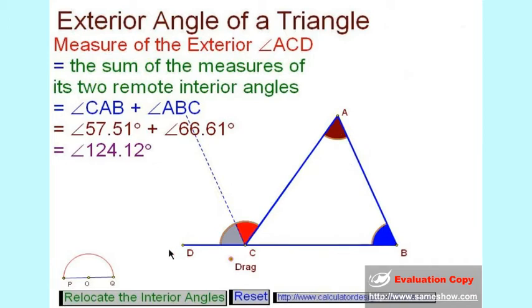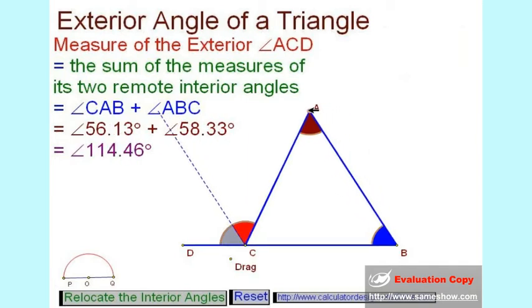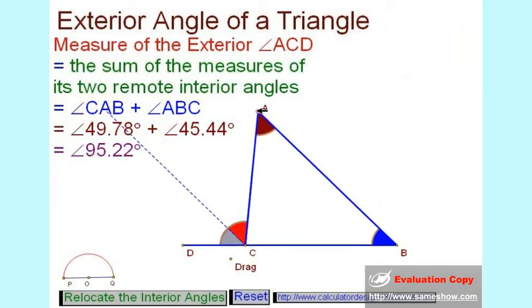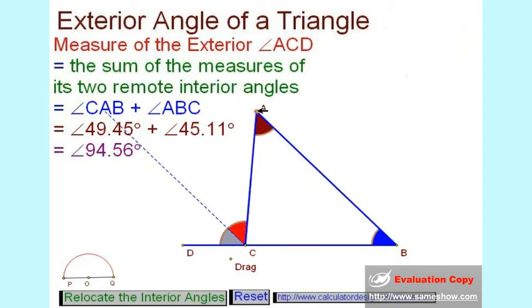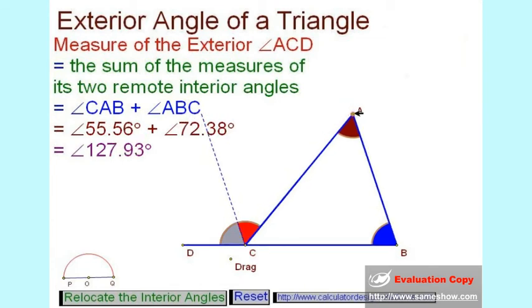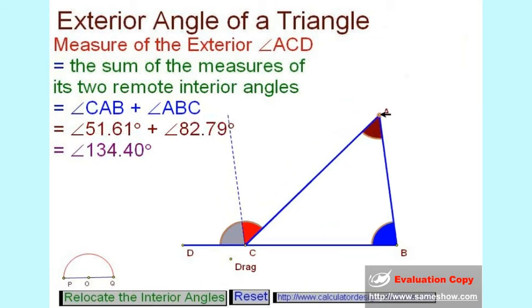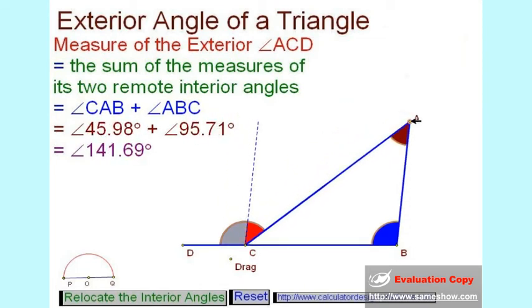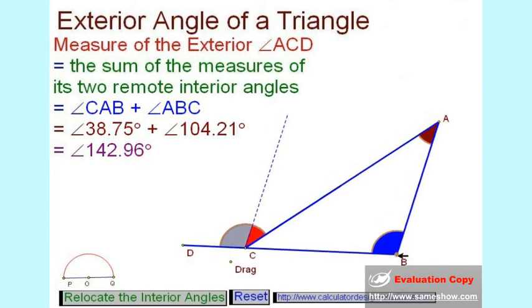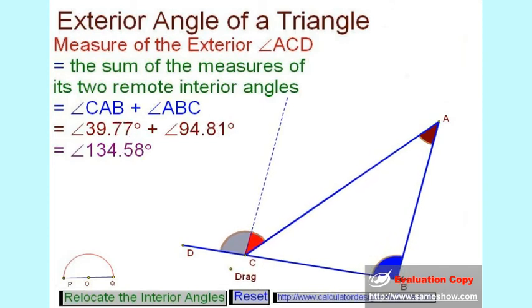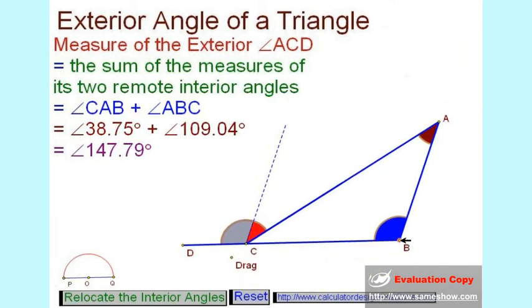Now we can see even when rotating or moving this point, the exterior angle remains equal to the sum of the two remote interior angles, which you can easily see here. Even if you tilt this triangle, the exterior angle equals the sum of the two remote interior angles.